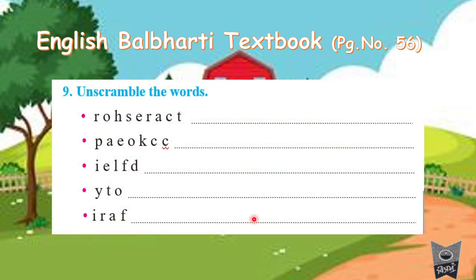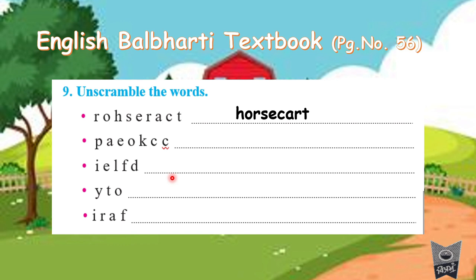One more exercise — unscramble the words. The alphabets are mixed up, not in proper order, jumbled. You have to find out what word it can be. Think! The first one — yes, you are right, it is 'horse cart.' S-E-C-A-R-T — horse cart. So write the correct spelling: horse cart. Very good! Now look here — what spelling might this be? Think!